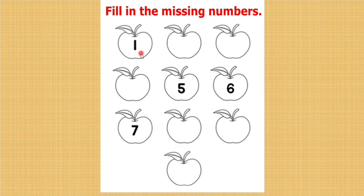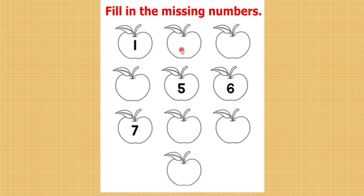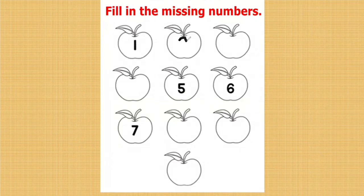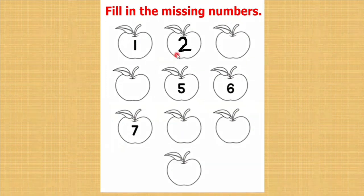Here the first number is 1. What comes after 1? To do this, you have to keep 1 in your mind and do the forward counting from 1. 1, 2. What comes after 1? 2. Let us write 2 here.